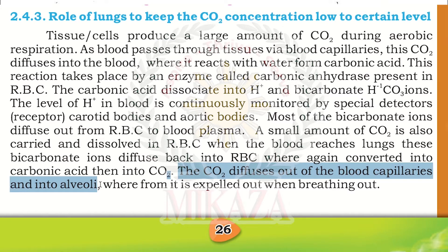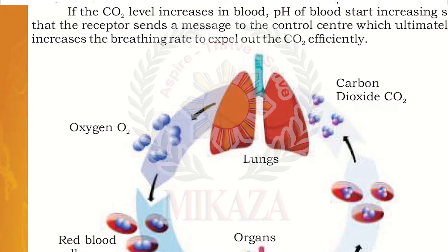Carbon dioxide is expelled from the blood through breathing out. If the CO2 level increases in the blood, the pH of the blood starts decreasing. So the receptor sends a message to the control center, which ultimately increases the breathing rate to expel CO2 efficiently.